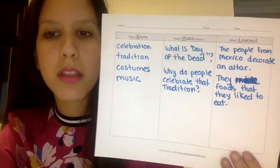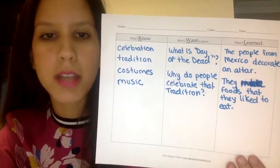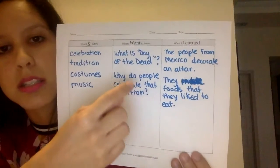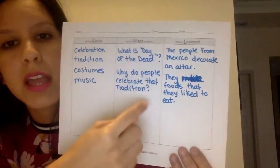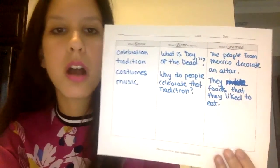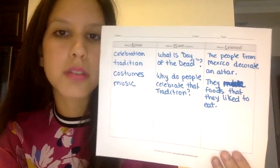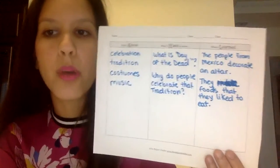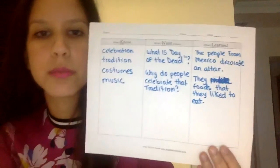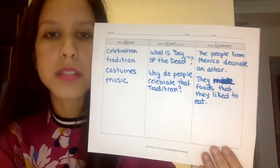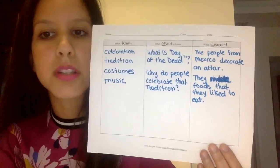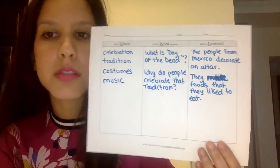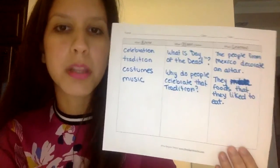Here your child can write as many thoughts as he or she has. Then on the next section, which says 'what I want to know,' your child can write questions on the topic before or during the story. For example: What is the Day of the Dead? Why do people celebrate that tradition? Why is the celebration important? When they have finished writing on those two sections, you can begin playing the story, which is provided on the link below this video.